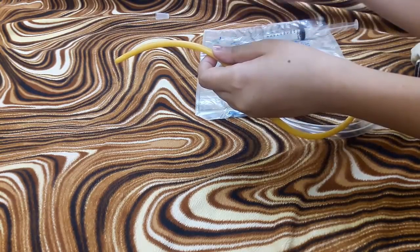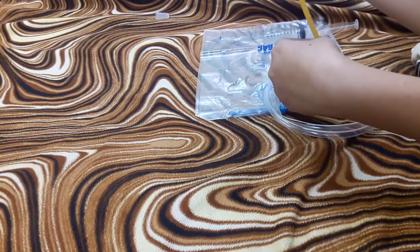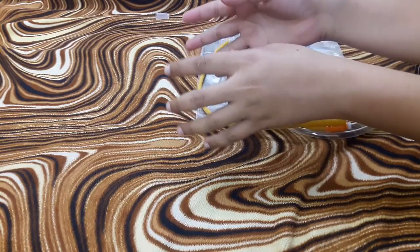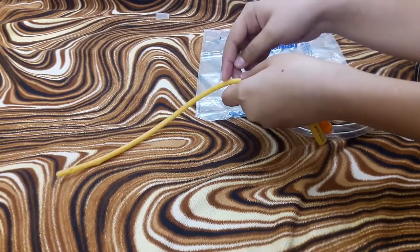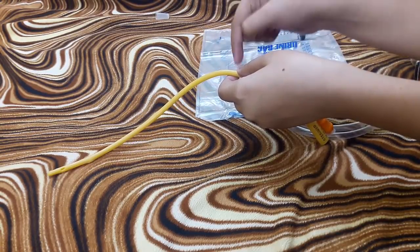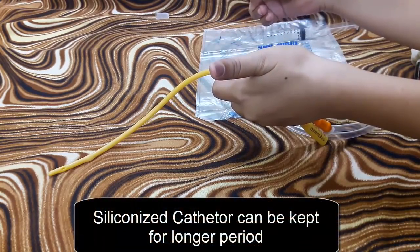Foley catheter can be used for one to two weeks. Some catheters are silicon-coated, like this one. Siliconized catheters are used to reduce the reaction, so they can be kept for a longer period than usual, for approximately three months.